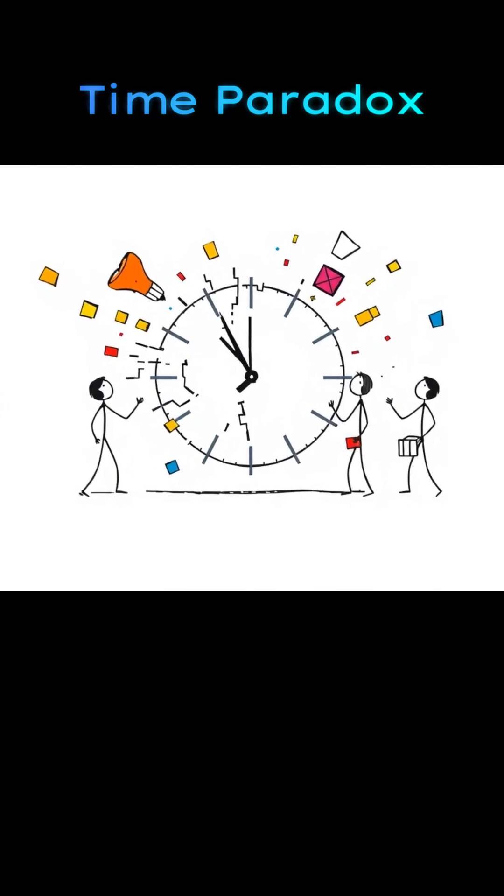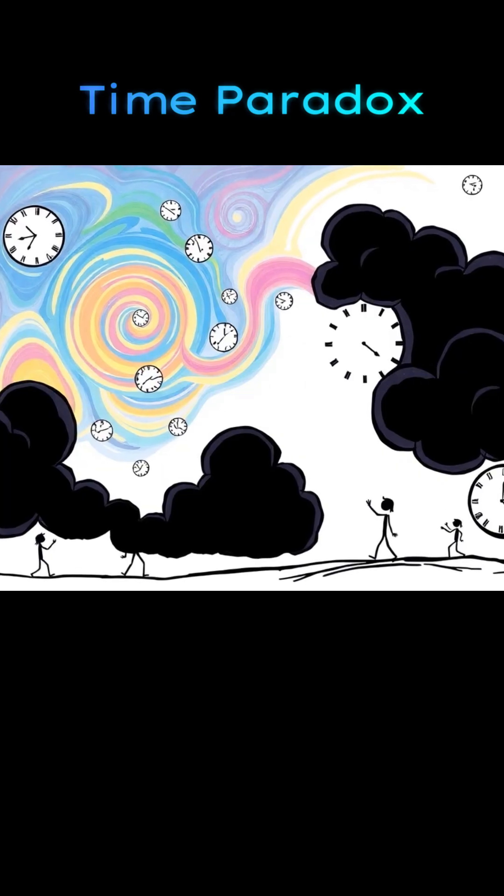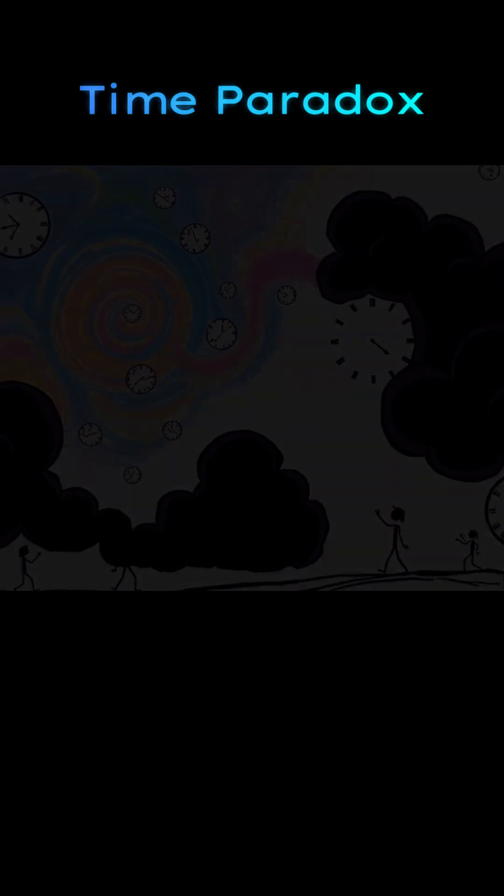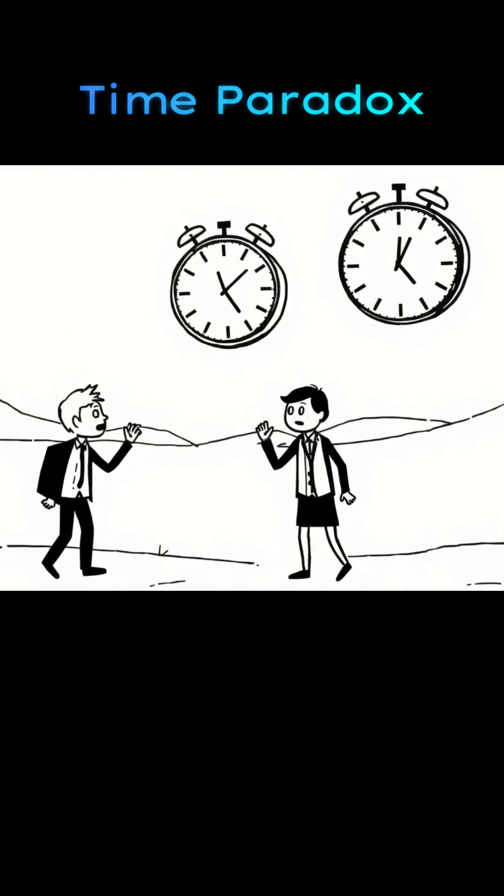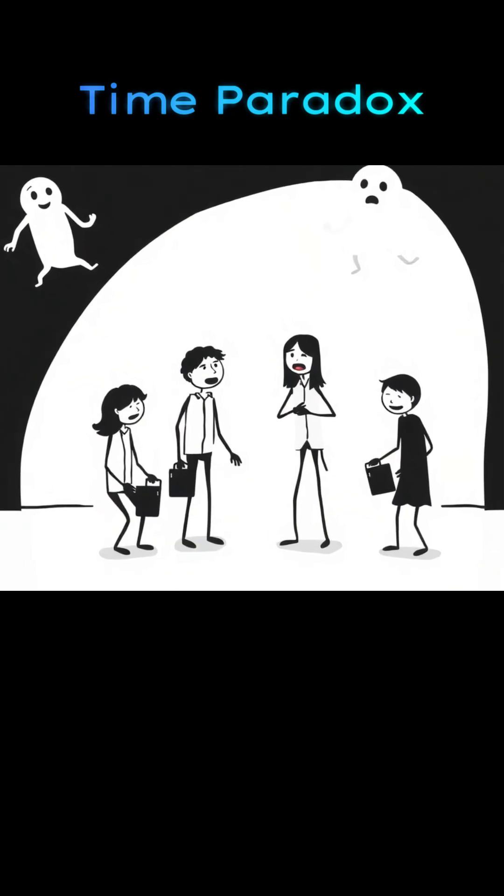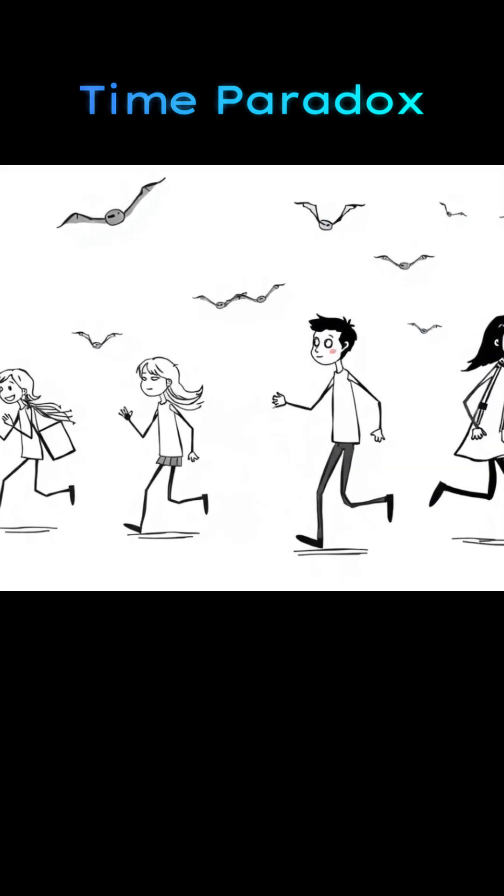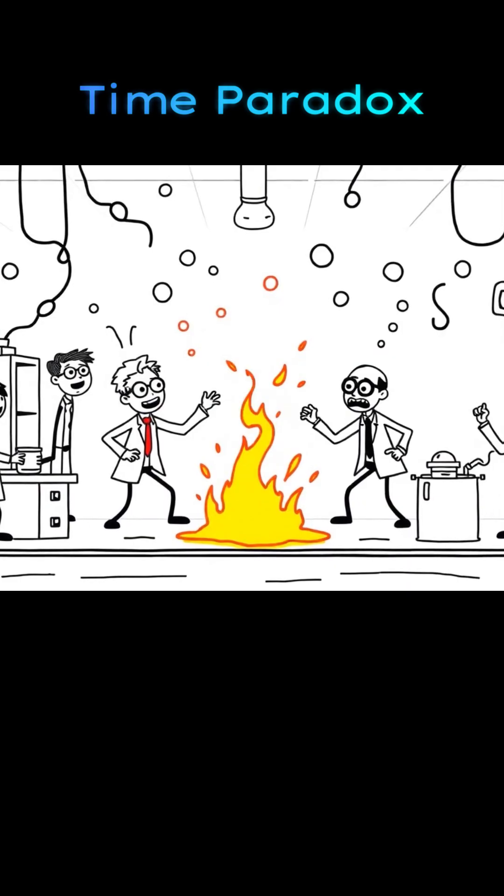The timeline splinters into countless contradictions. The sky fractures into swirling clocks. Days repeat, then vanish entirely. People relive deaths again and again. Others freeze between seconds forever. Time loses meaning for everyone.